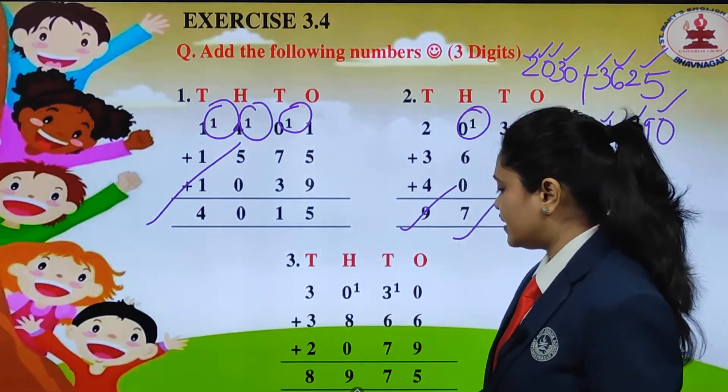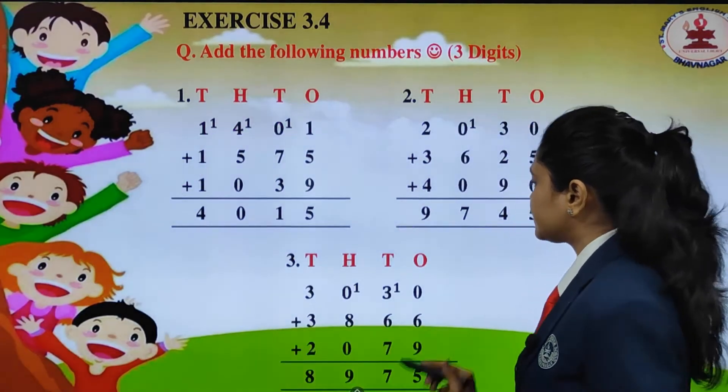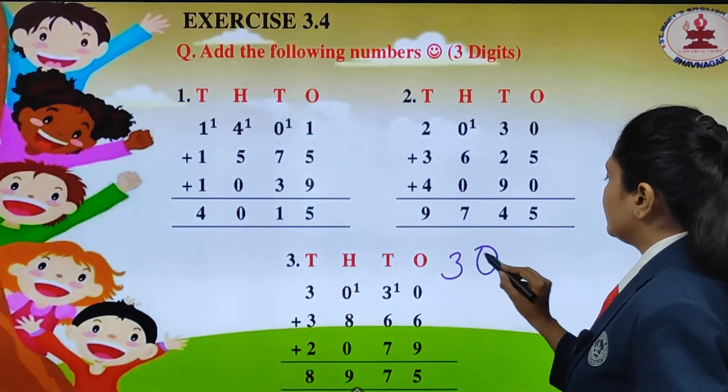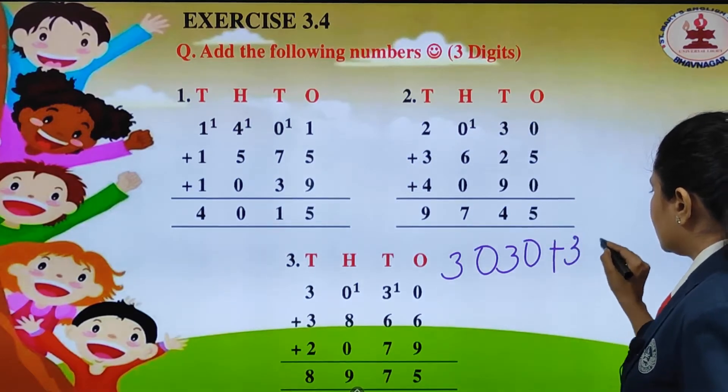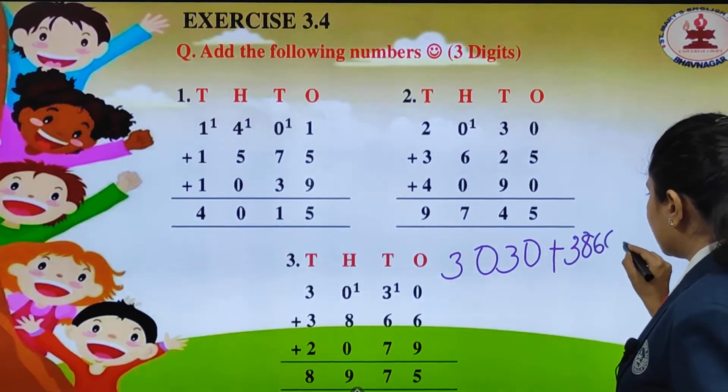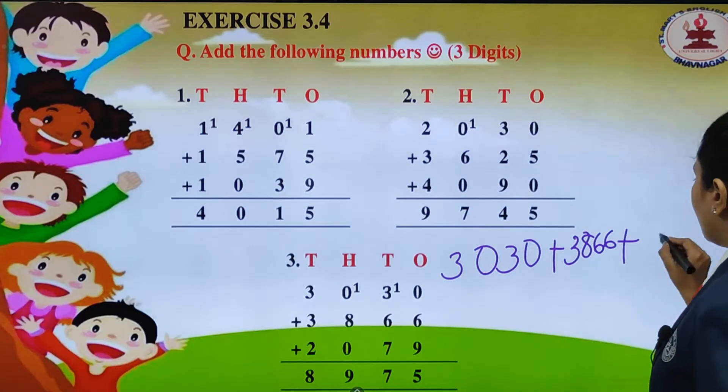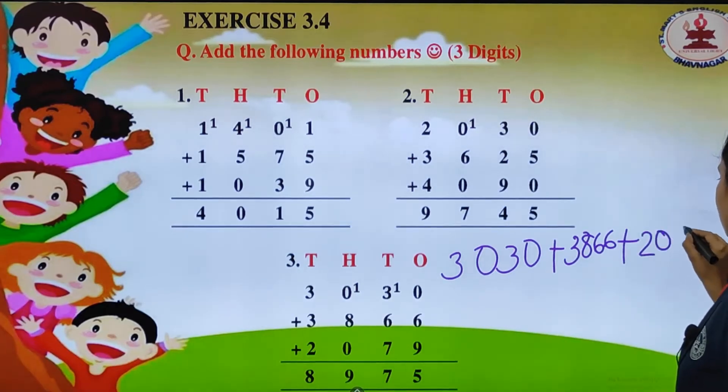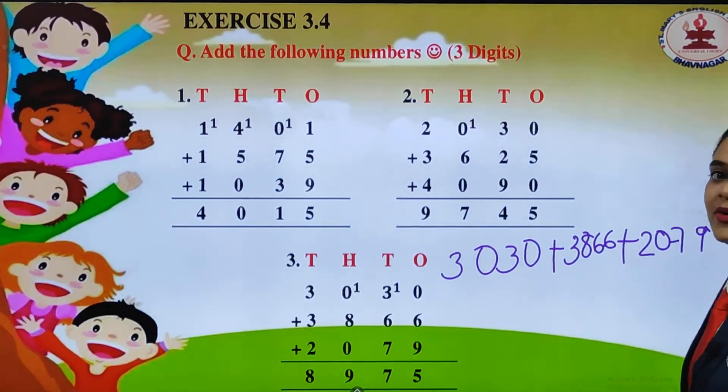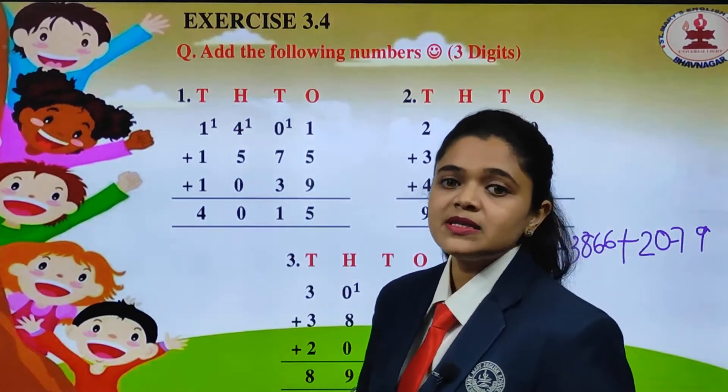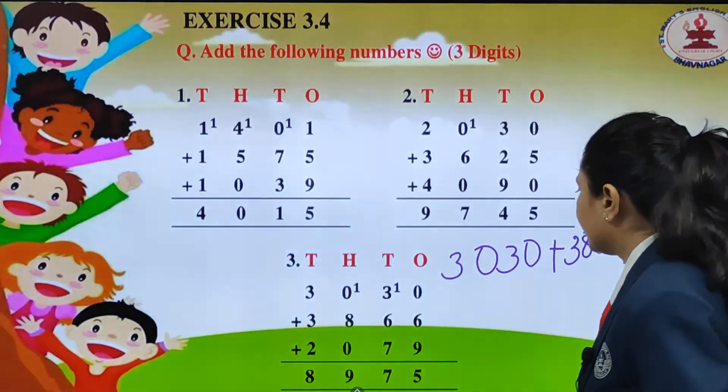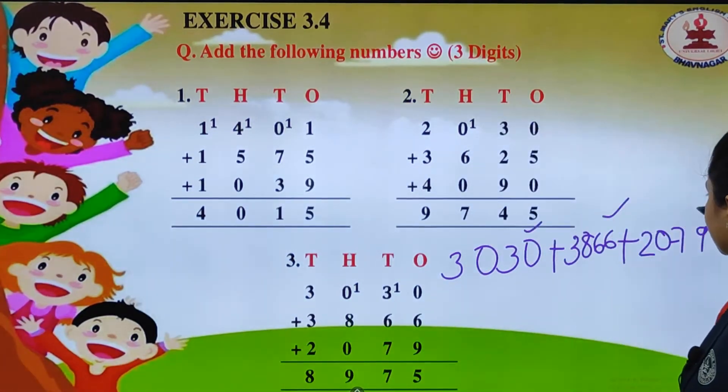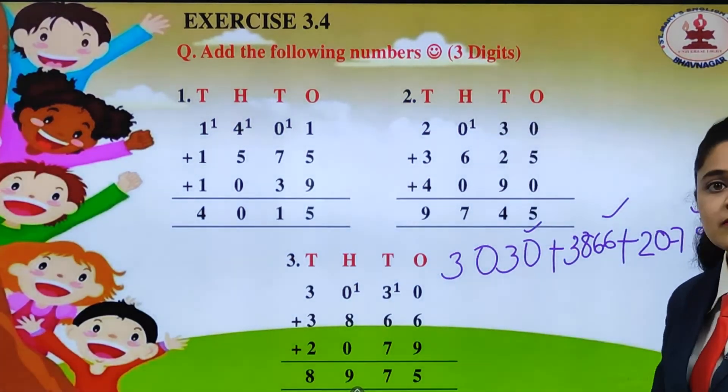Now children over here we have the next number, that is 3030 plus 3866 plus 2079. Which are the numbers which will go under ones place value? Let us see. We have 0, 6, 9. So we have placed under ones.